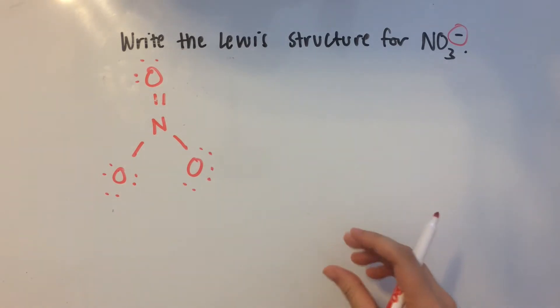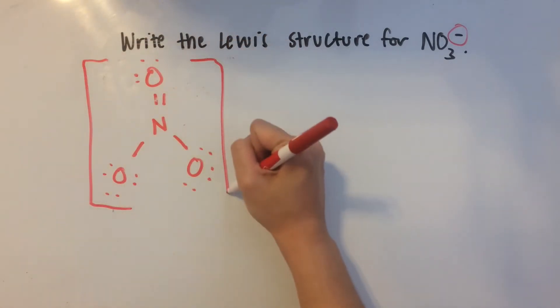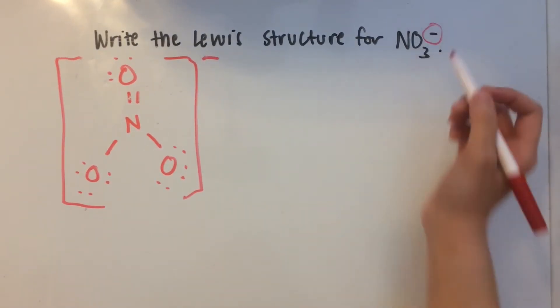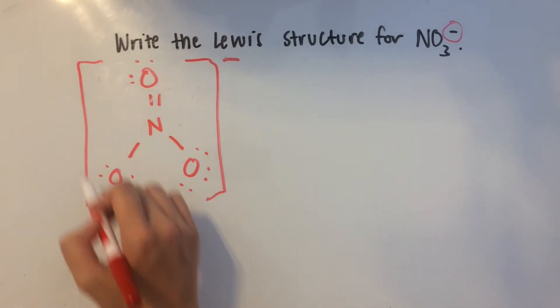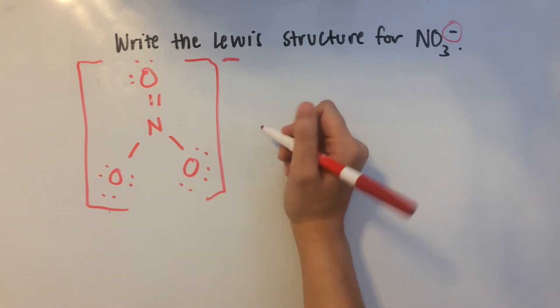We also need to keep in mind that we should write this in brackets and give it an extra negative because this is an ion. This is the ion nitrate. So basically when you put a Lewis structure in brackets with this, it just shows that it's the NO3 minus ion.